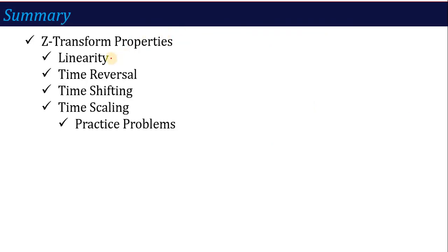After this, you should be able to understand and apply all these properties very easily — reversal, shifting, scaling — all these properties you can apply easily. Properties are not finished yet; in the next lecture we will see more properties regarding your Z-transform. The next very important property we will discuss is called the Multiplication Property. Stay with me and see you in the next lecture. Thank you.